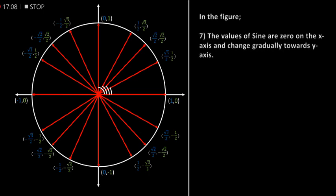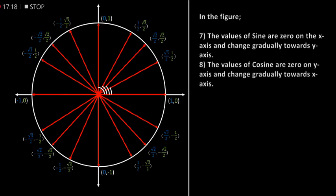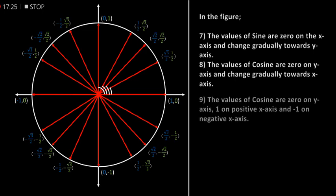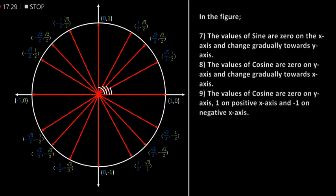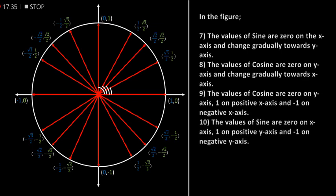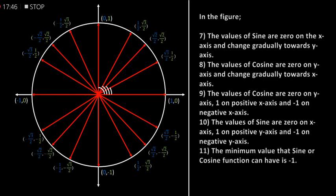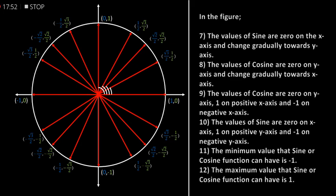In the figure, the values of sine are 0 on the x-axis and change gradually towards the y-axis. The values of cosine are 0 on the y-axis and change gradually towards the x-axis. The values of cosine are 0 on the y-axis, 1 on the positive x-axis, and minus 1 on the negative x-axis. The values of sine are 0 on the x-axis, 1 on the positive y-axis, and minus 1 on the negative y-axis. The minimum value that sine or cosine function can have is minus 1, and the maximum value is 1.